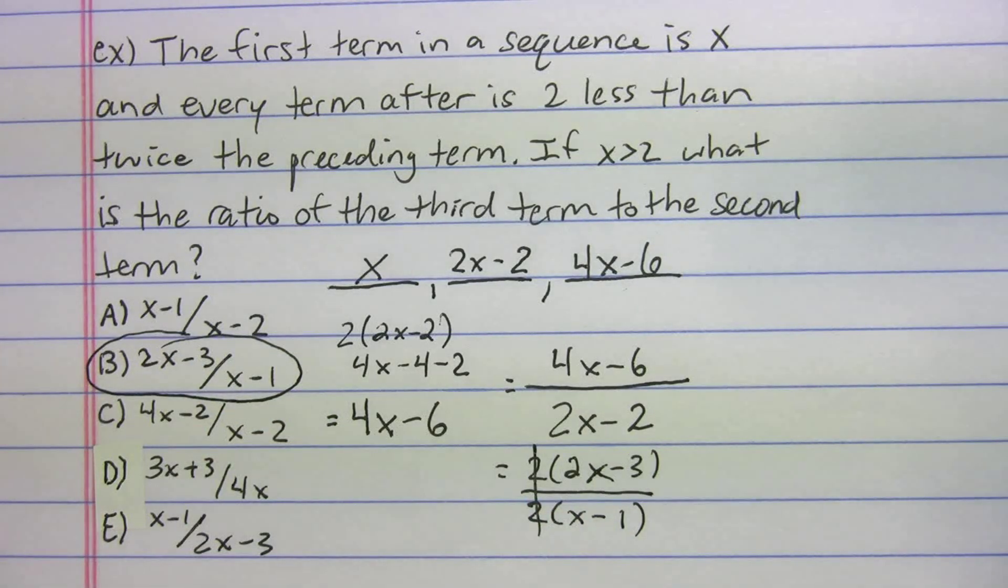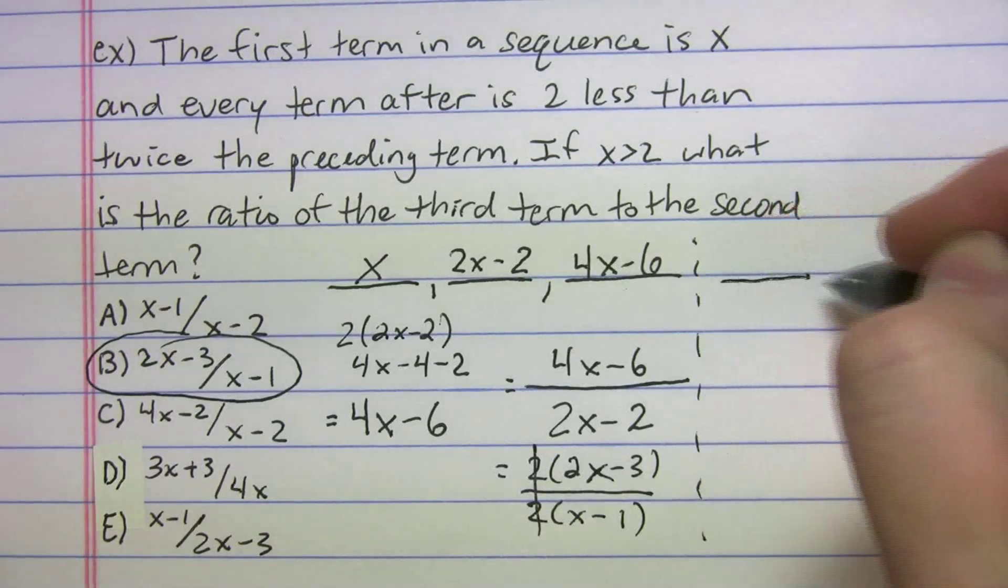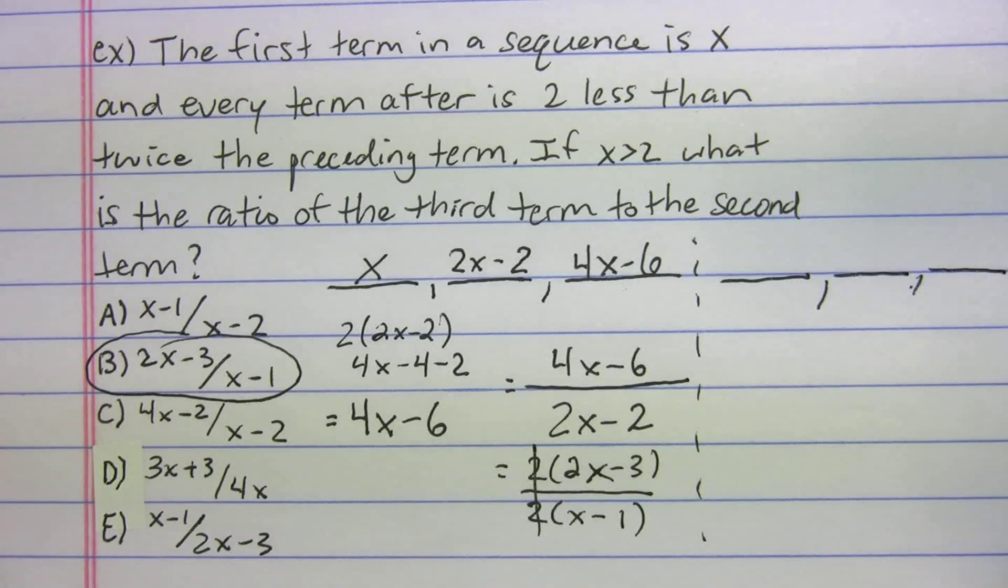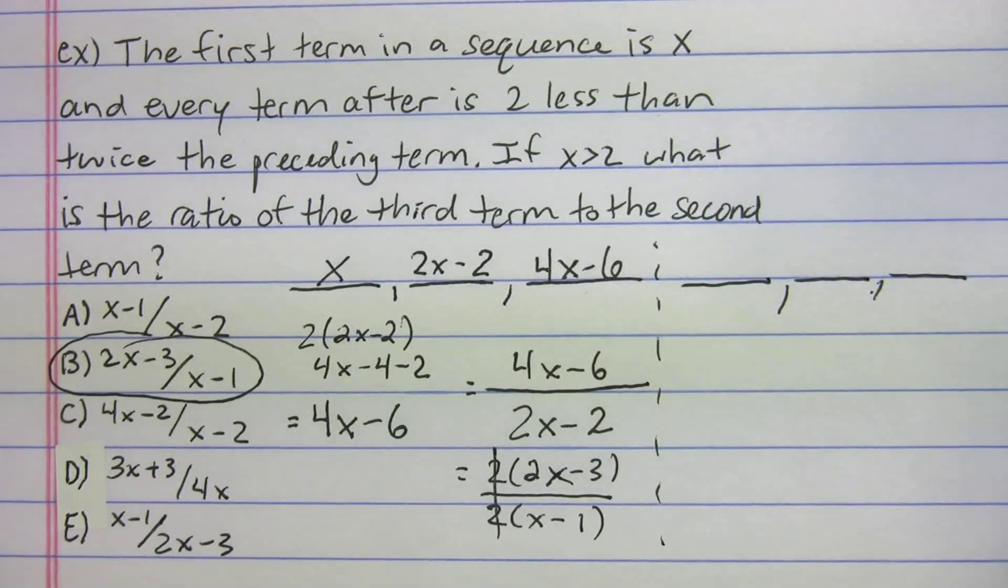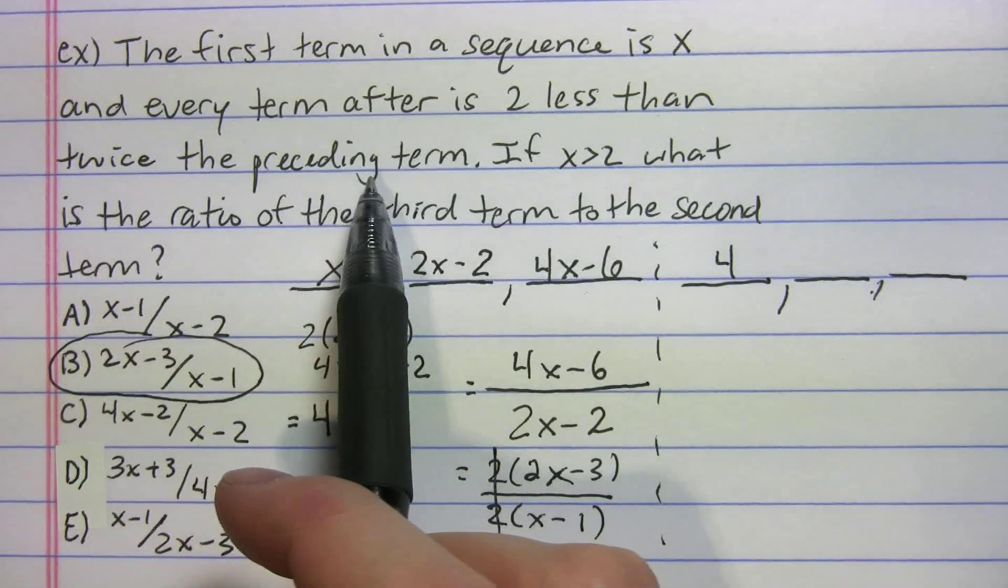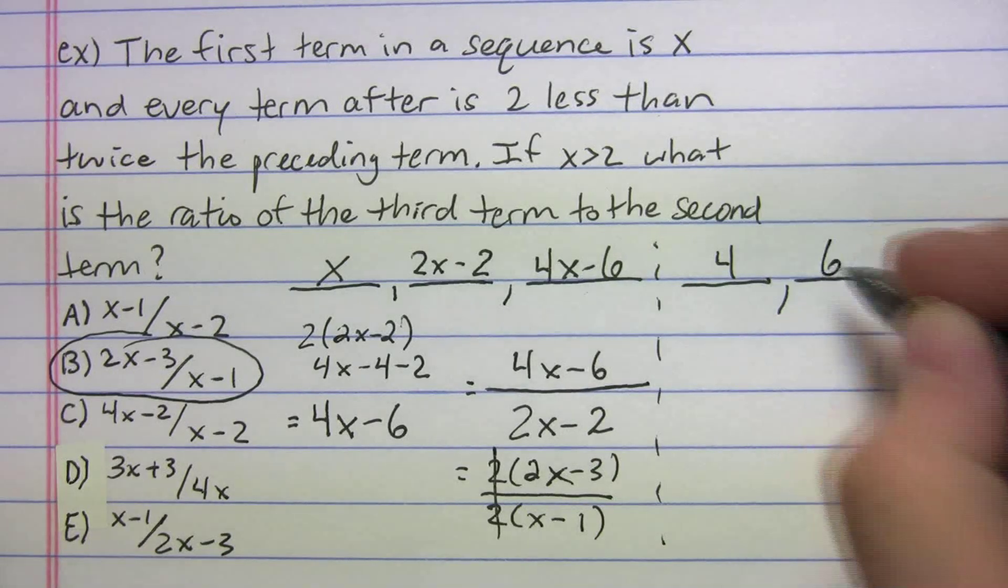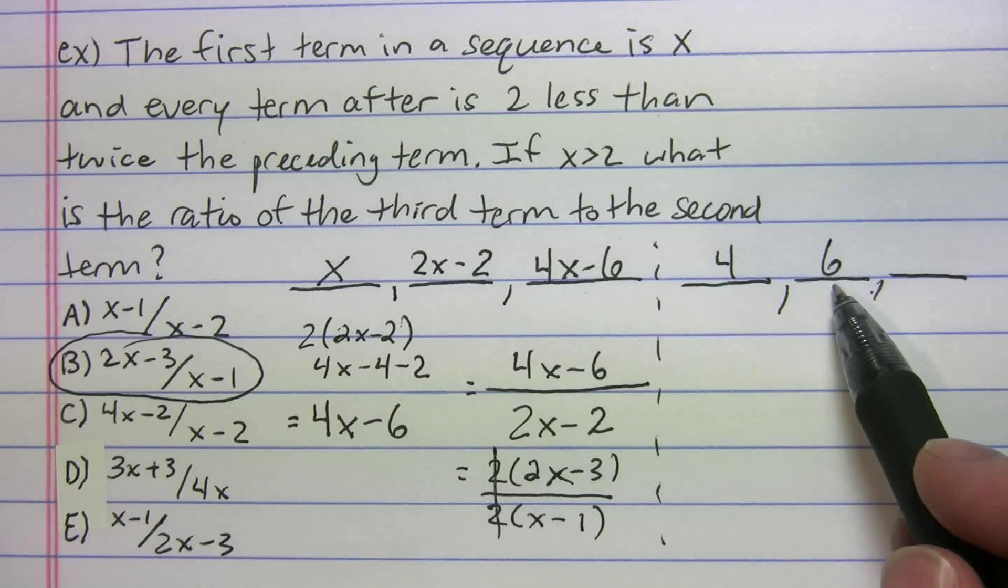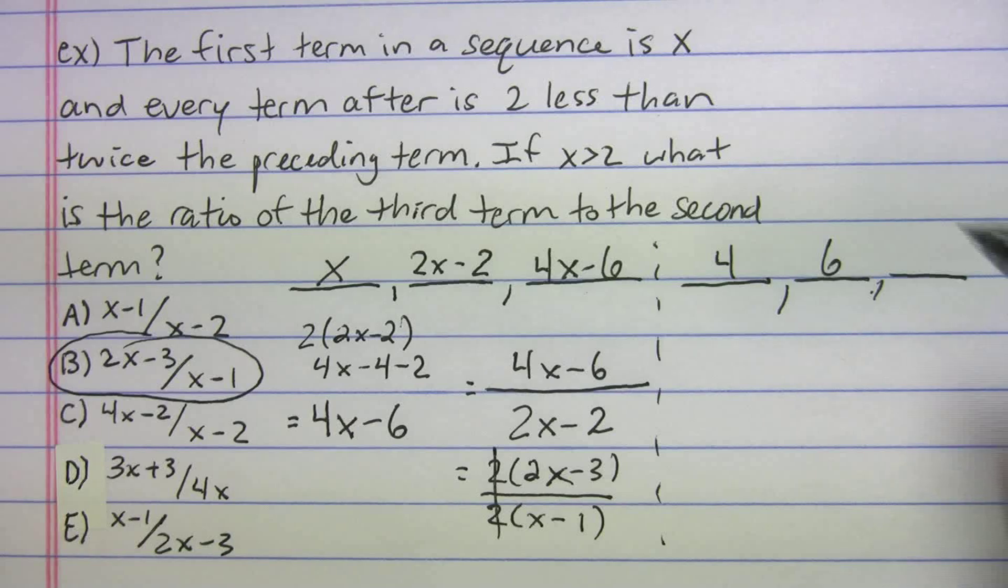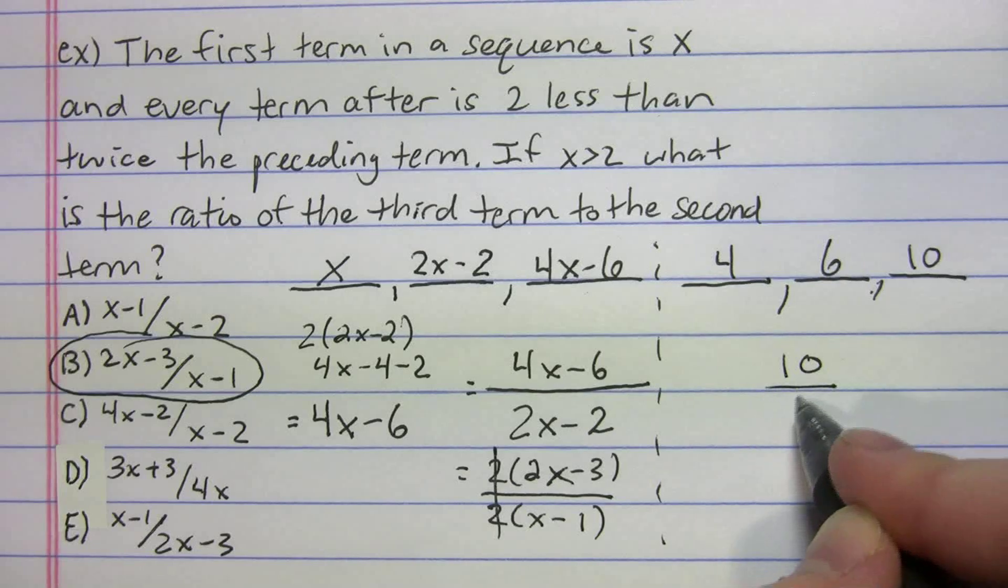Now let's say you had no idea how to do that algebraically. What you could do is put your slots in and just pick numbers. Let's say the first number is 4. What would the second number be? Twice the preceding minus 2: 4 times 2 is 8, minus 2 is 6. Let's find this one. To get this spot, two times the preceding is 12, minus 2 is 10. The ratio of the third to the second: 10 over 6, or 5 over 3.